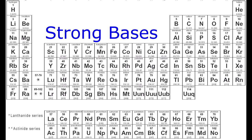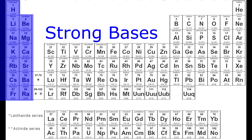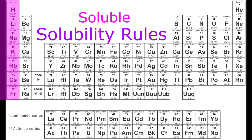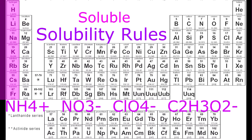Strong bases always end with OH⁻. They are column 1 and 2: LiOH, NaOH, KOH, RbOH, CsOH, Ca(OH)2, Sr(OH)2, Ba(OH)2. It's soluble if it's in column 1 — Li, Na, K, Rb, Cs — or if it's ammonium, nitrate, perchlorate, or acetate. Those are always soluble.